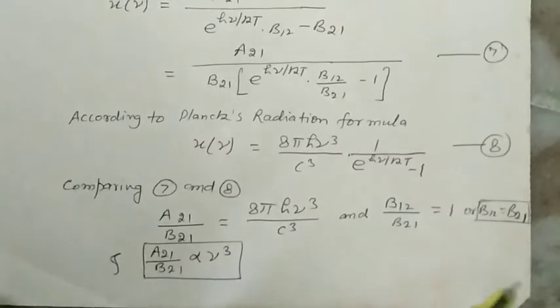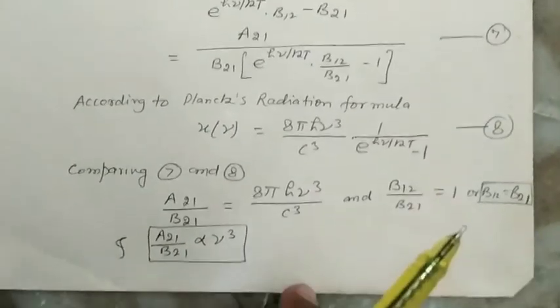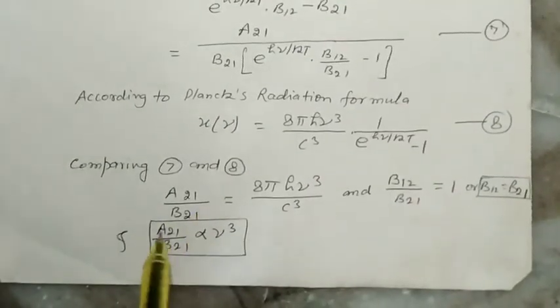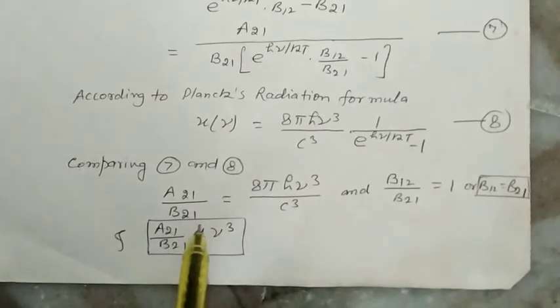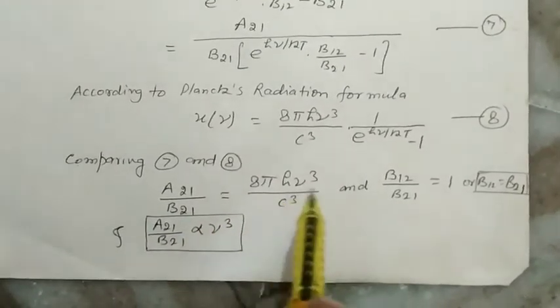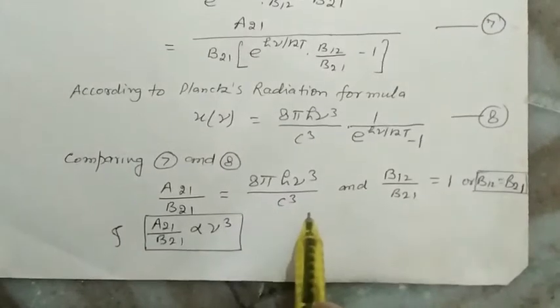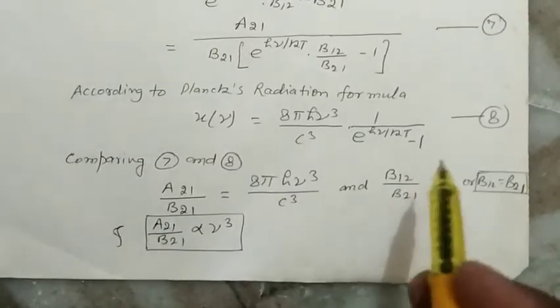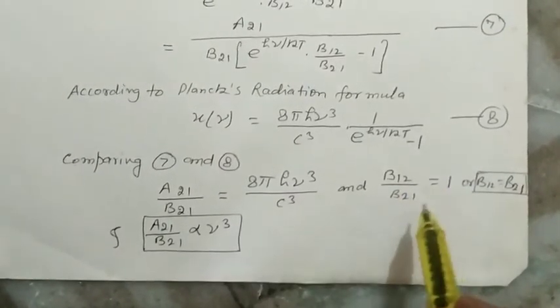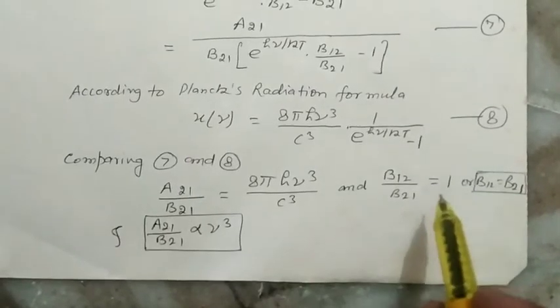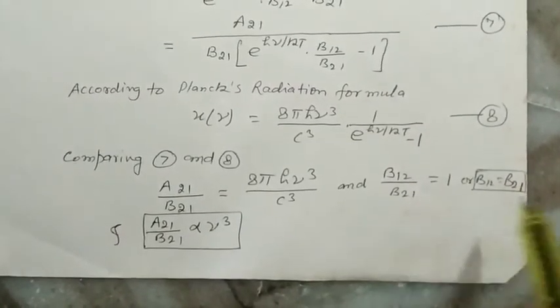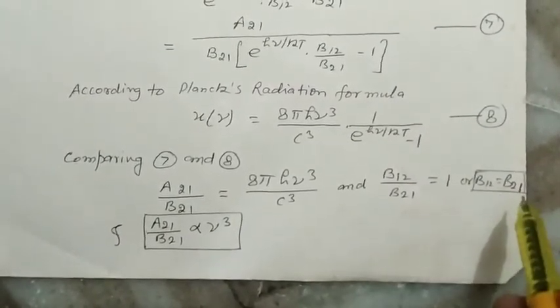Equating or comparing equations 7 and 8, we get A21/B21 = 8πhν³/c³ and the second factor B12/B21 = 1. From here, it is clear that B12 = B21.